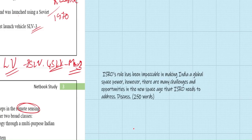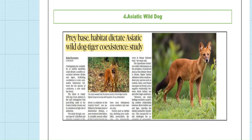Previous year question regarding ISRO: 'ISRO's role has been impeccable in making India a global space power. However, there are many challenges and opportunities in the new space age that ISRO needs to address.' Moving to the next topic: the next news is regarding the Asiatic Wild Dog. The article mentions these animals are facing a risk of extinction.